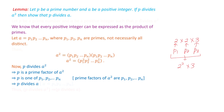So we have proved that p divides a squared implies p divides a. This is the lemma we have proved, and we will use it in proving our next results. Now we are going to prove our first result: that square root 2 is an irrational number.